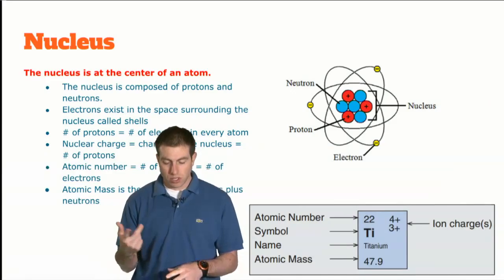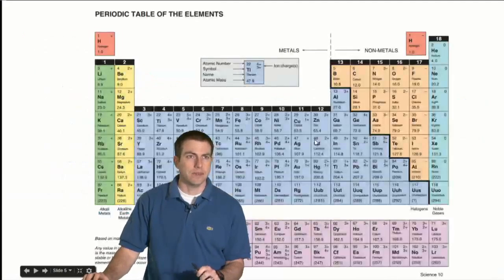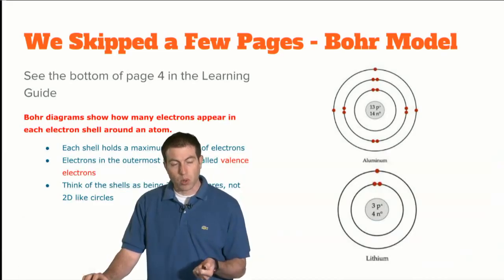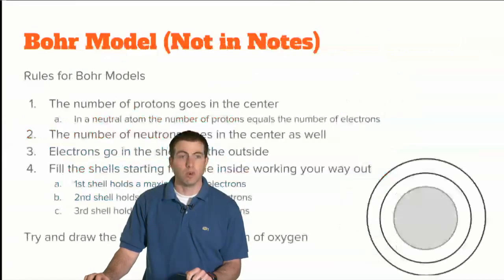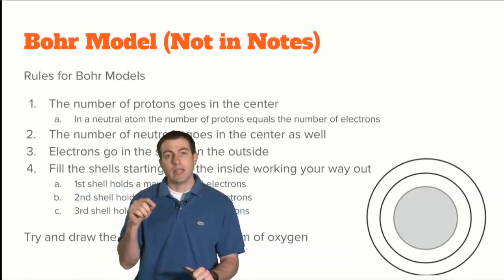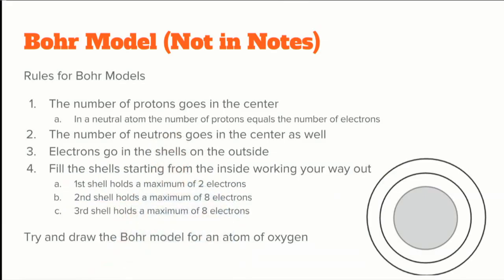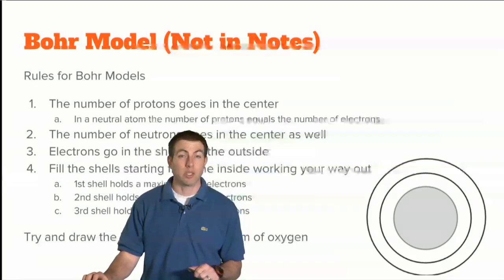When we left off we were talking about ions. We covered the periodic table, did some Bohr models — you guys will be expected to know the first 18 elements in terms of Bohr models. The rules: protons and neutrons go in the middle circle, you start filling your shells from the inside working outward. First shell contains two electrons, second shell is eight, third shell is eight. That's as far as you need to go in Science 10.